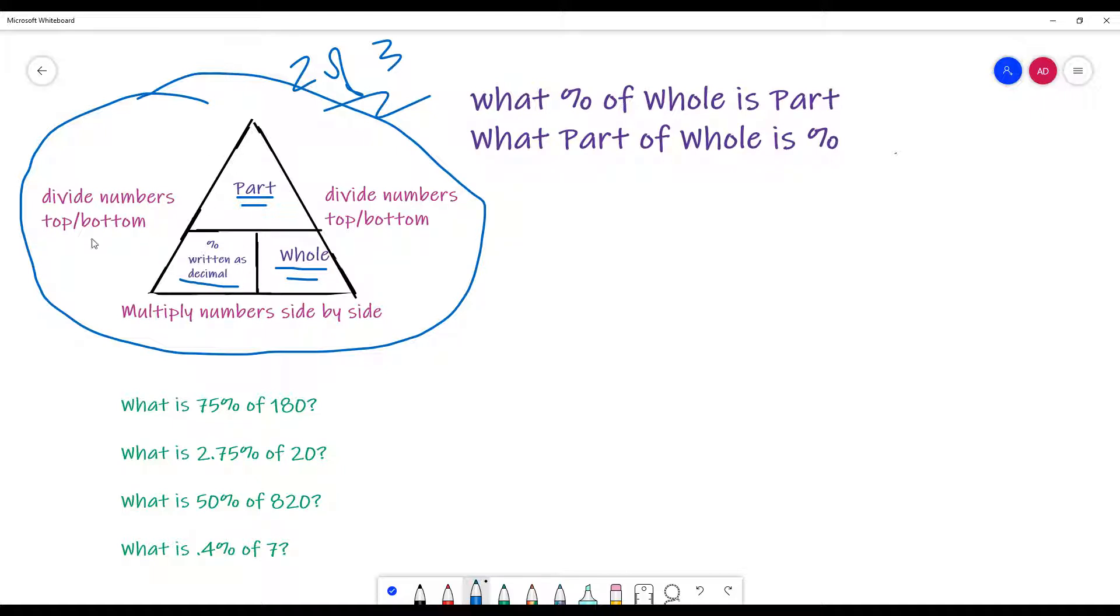Now, once you place the numbers in these spots, we basically take the idea that we're going to multiply if the numbers come side by side. So if the two numbers are written side by side, I'm going to multiply these two together. If the numbers are written top and bottom, I'm going to divide them.